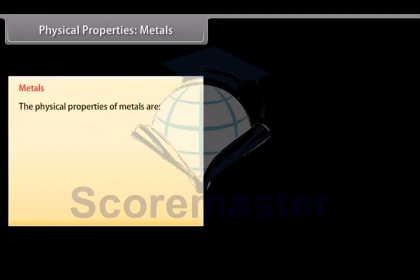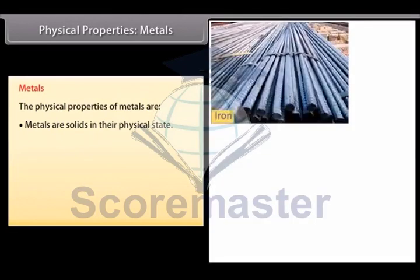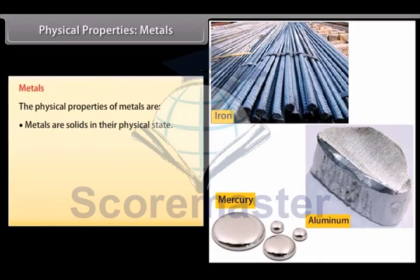The physical properties of metals are physical state. Metals are solid at room temperature. For example, Iron, Aluminium. Only mercury is liquid metal.